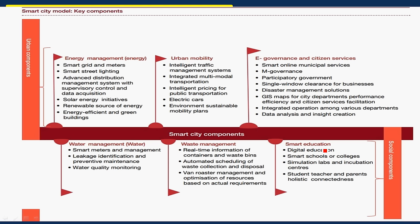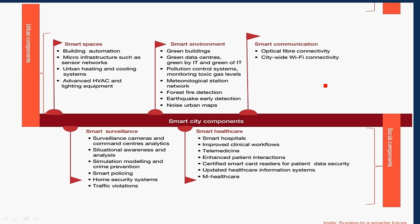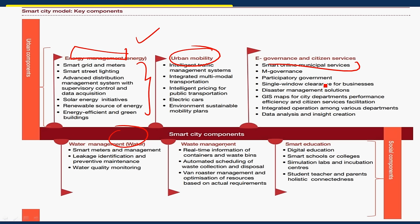Now let's look at the key components of a smart city model. To consider a city as a smart city, these components must be present. The components include: energy management, urban mobility, e-governance and citizen services, water management, waste management, education, smart spaces, smart environment, smart communication, smart surveillance, and smart healthcare.